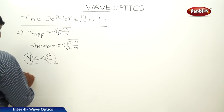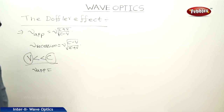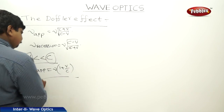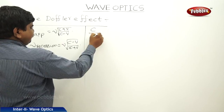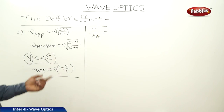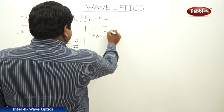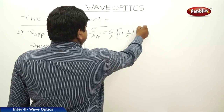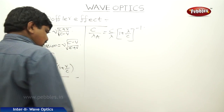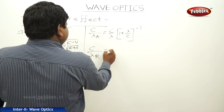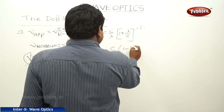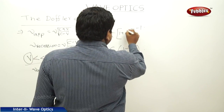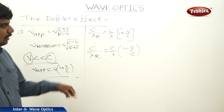In these cases, nu approach is equal to nu into 1 plus v by c. Dividing with c by lambda, since c equals nu lambda, we get c by lambda approach equal to c by lambda into 1 plus v by c, whole power minus one. And c by lambda recession is equal to c by lambda into 1 minus v by c. The minus one power is applied through the binomial approximation.